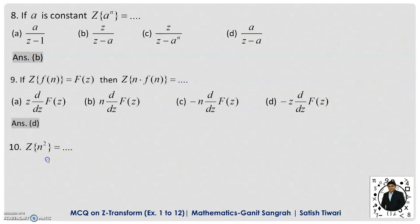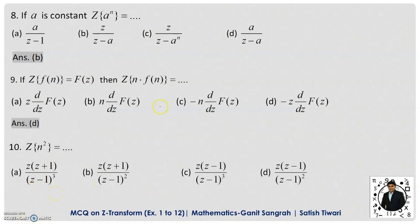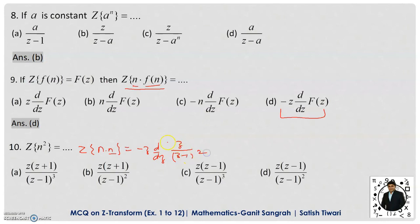Question 10: The Z-transform of n² is given by — applying the multiplication by n property from the previous question, we write Z{n²} = Z{n · n}. Taking f(n) = n, whose Z-transform is Z/(Z−1)², we apply the formula −Z·(d/dZ) to Z/(Z−1)². Differentiating increases the power in the denominator, so options B and D (which don't have the right power) are eliminated. Option A, which is Z(Z+1)/(Z−1)³, is the correct answer.